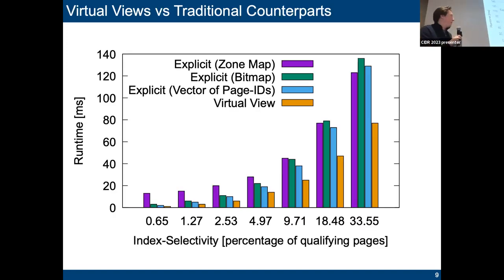From an experimental perspective, we basically want to answer two questions. First, does it actually help to scan these virtual views in comparison to traditional counterparts, like you could create a zone map or you could create a bit vector marking on the qualifying physical pages? And this actually, as you can see here, brings quite a lot depending on the selectivity of course, so it's a valid thing to do to create these virtual views.